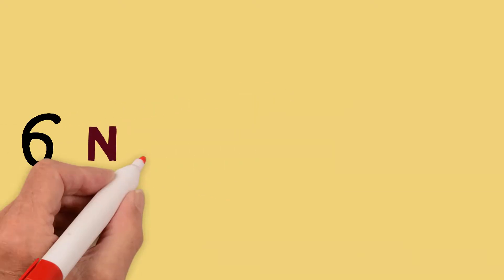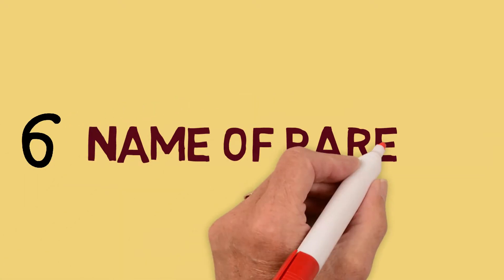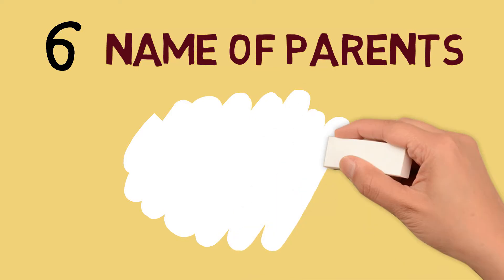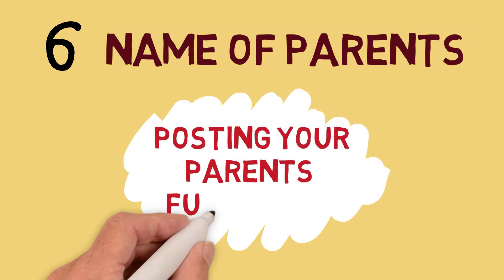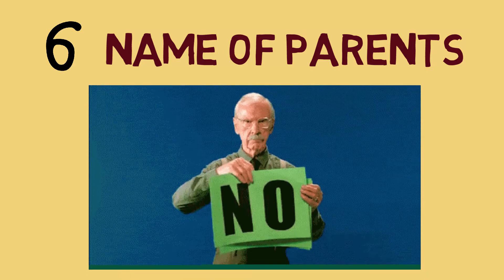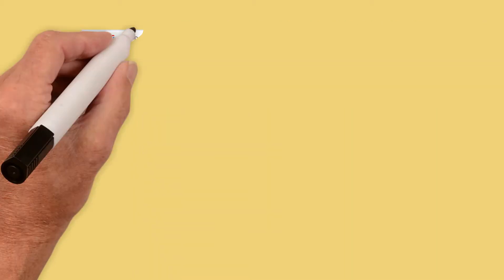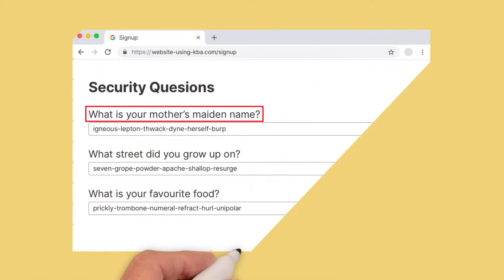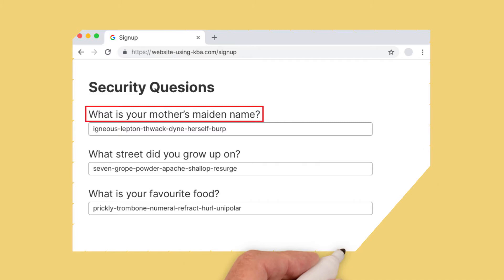Number six is the name of your mother and father — risky, yet not as risky as posting their full names, especially your mother's maiden name. In fact, you may have already encountered many websites that require your mother's maiden name as an answer to a secret question whenever you lose your password.